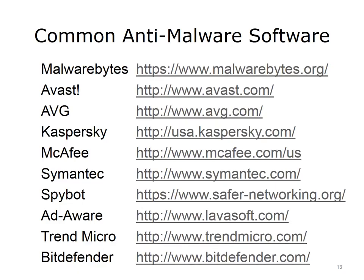Common anti-malware, or AM, software vendors include Malwarebytes, Avast, AVG Free, Kaspersky, McAfee, Symantec, Spybot, Adaware, Trend Micro, and Bitdefender. It is important to perform a web search for anti-malware software vendor rankings before investing in anti-malware software, as many computer magazines annually rank AM software vendors. It's a good idea to invest in the commercial version of reputable anti-malware software that includes automatic updates rather than rely on a free version. The cost of $50 or $60 a year is nothing compared to the pain of having your personal data stolen or your computer's data held for ransom.